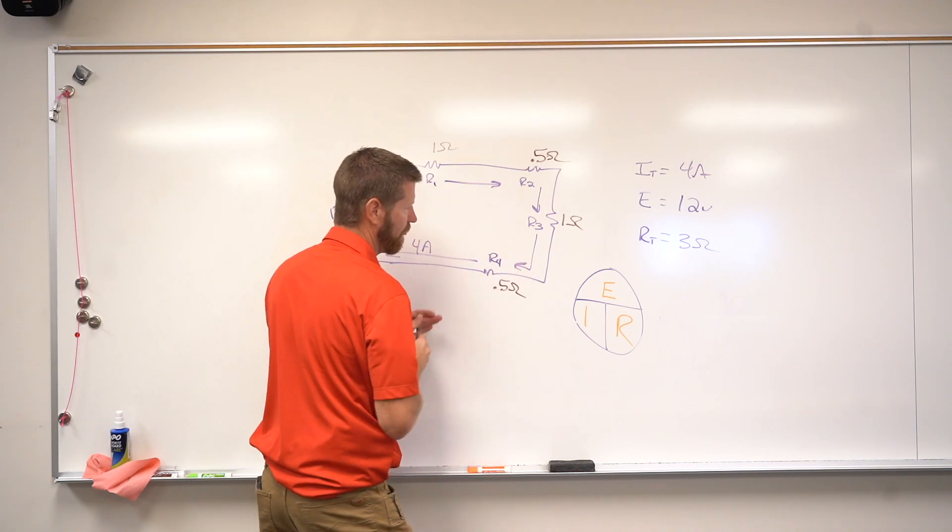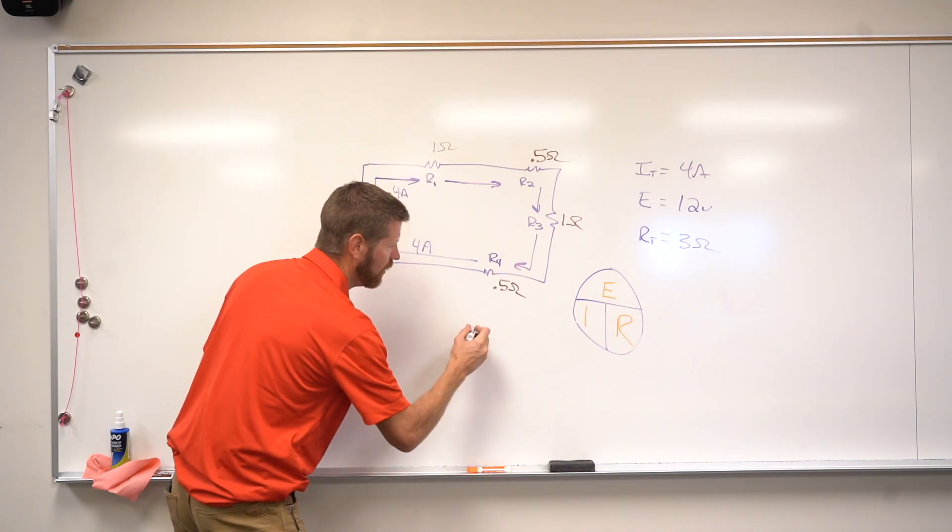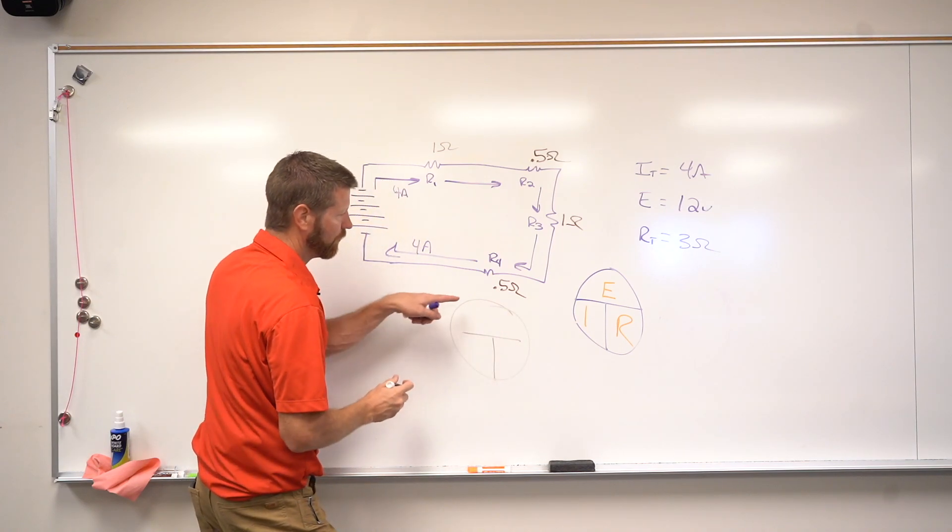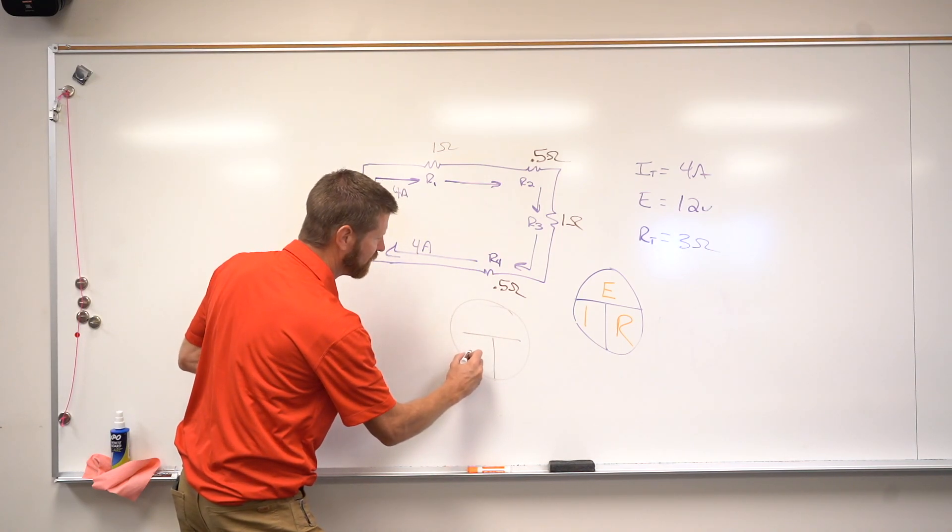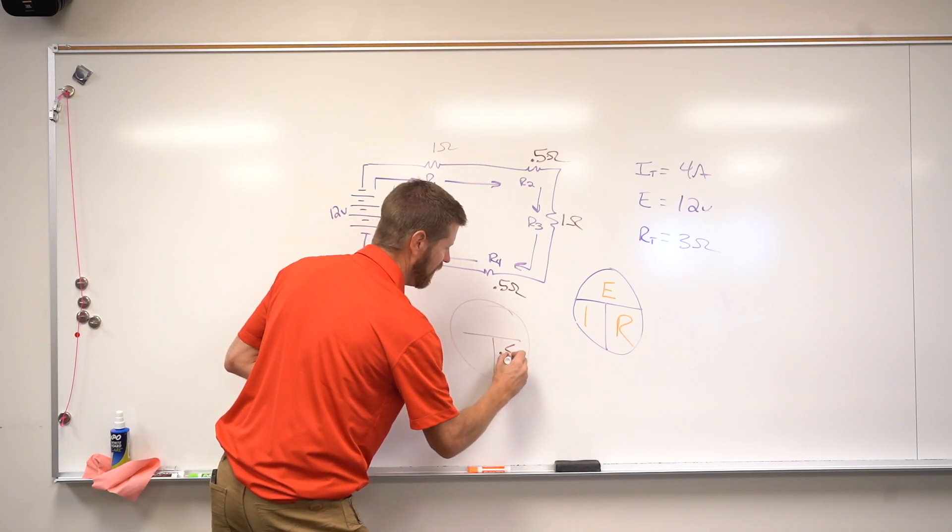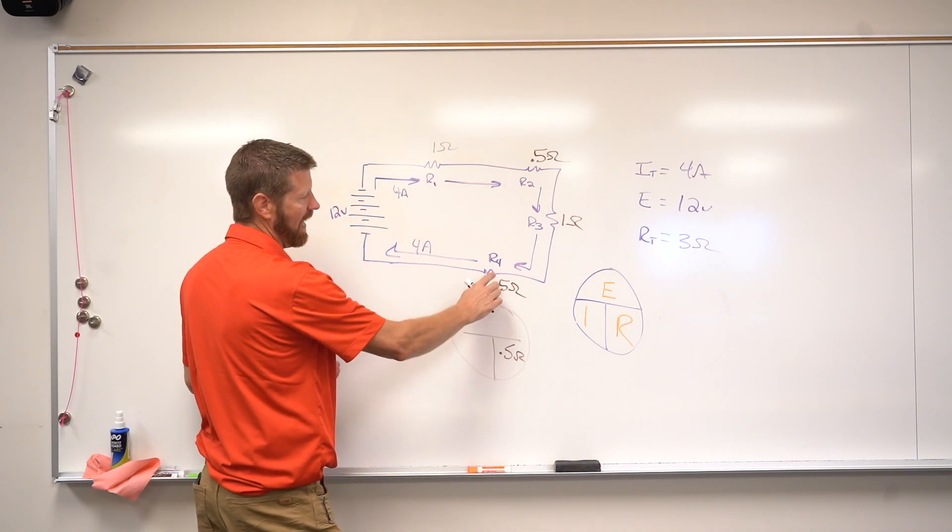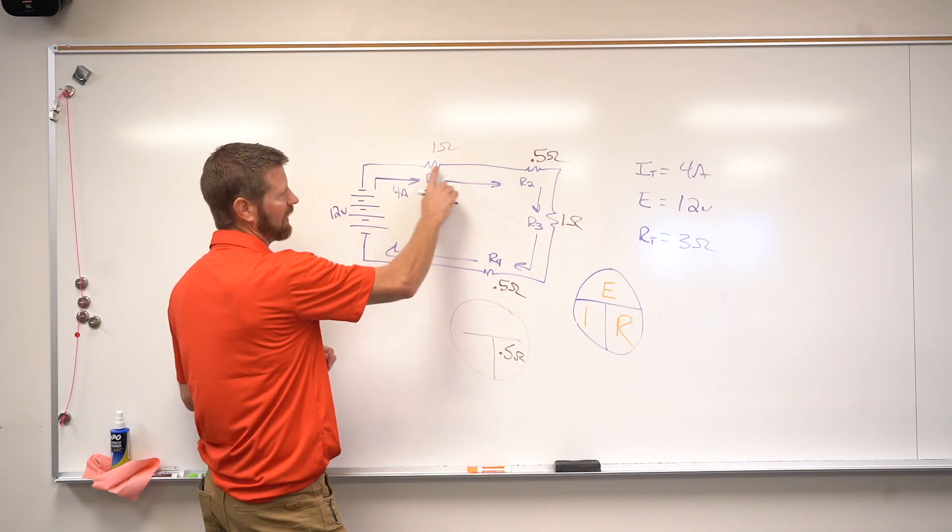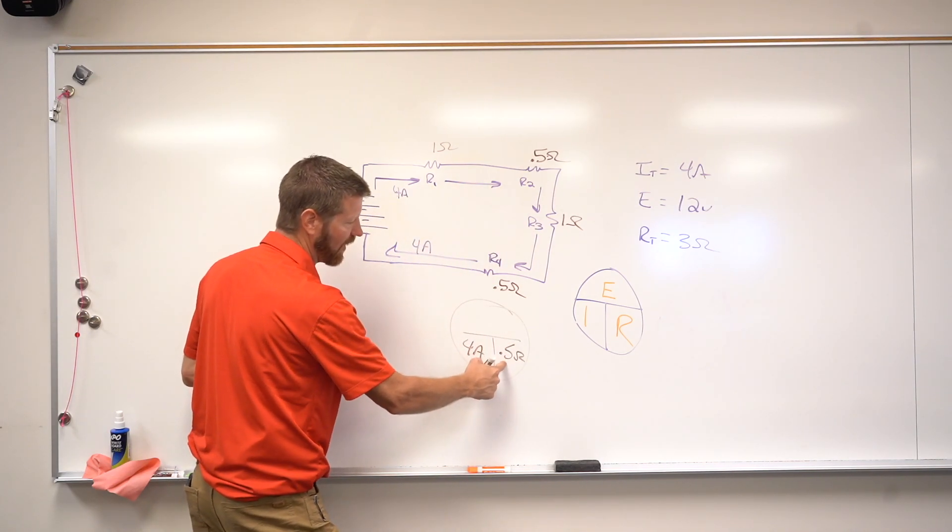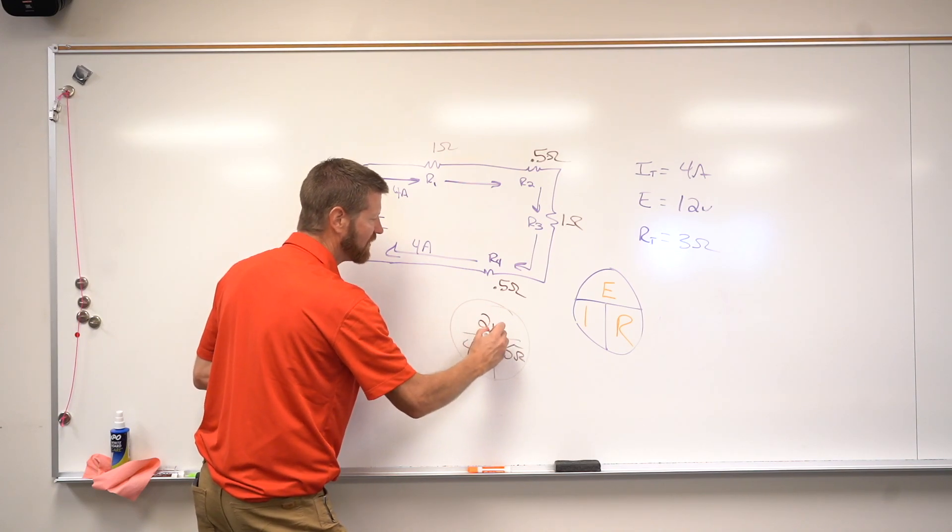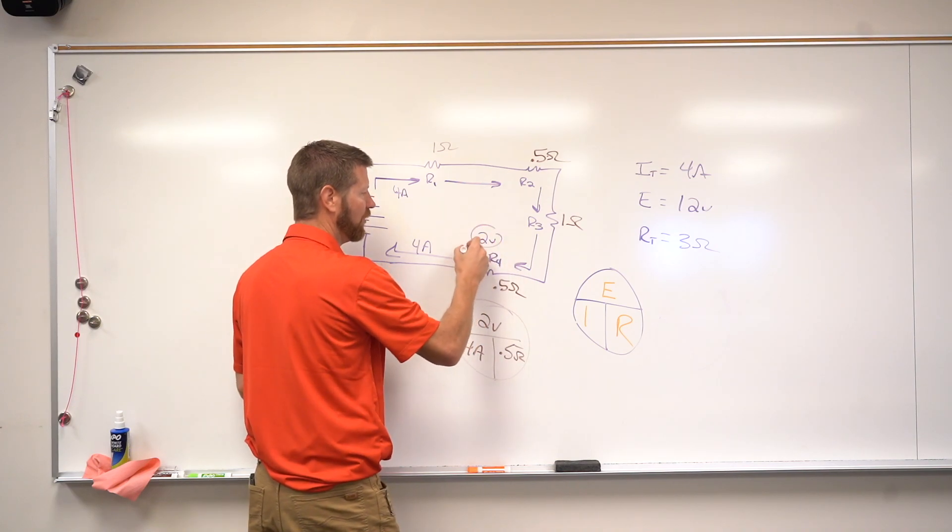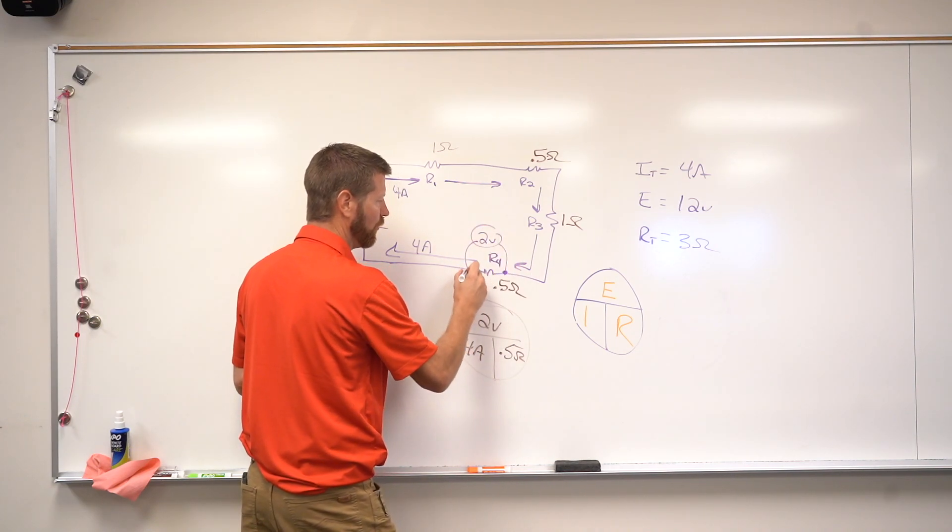So again, let's focus on resistor 4. We're going to use Ohm's Law. So we're going to go back to our blank solving circle. The resistance is 0.5 ohms. Oops, put that in the wrong spot. 0.5 ohms. And then the amperage, we said whatever leaves the battery returns to the battery, that's 4 amps. So 4 amps times half an ohm, that's 2 volts.